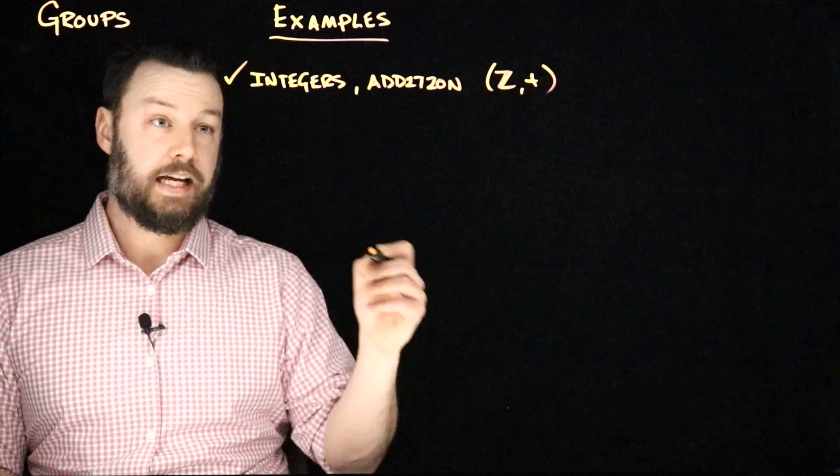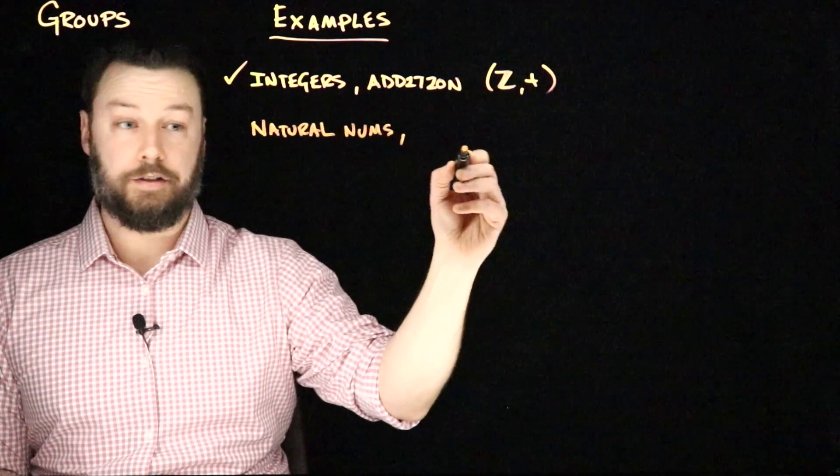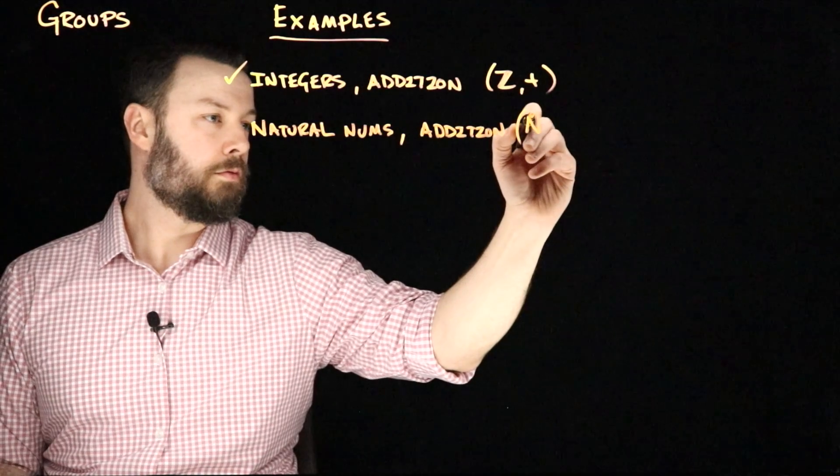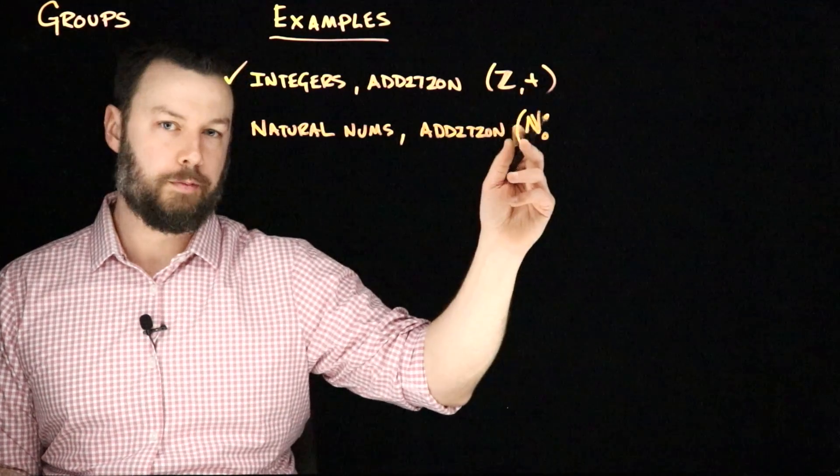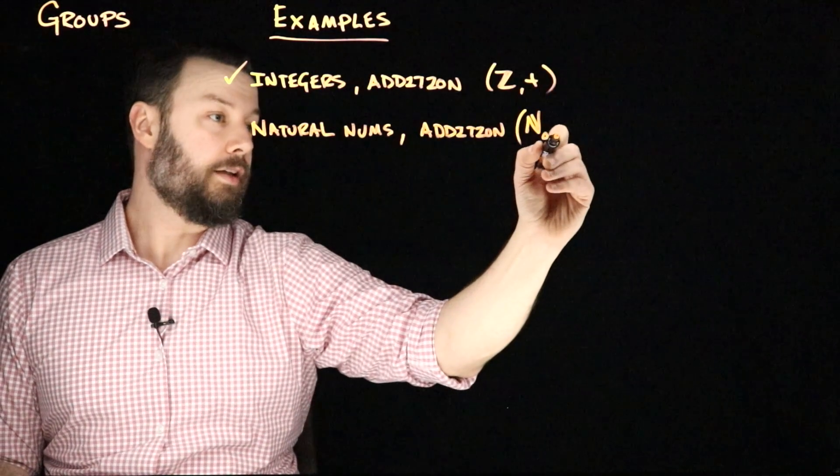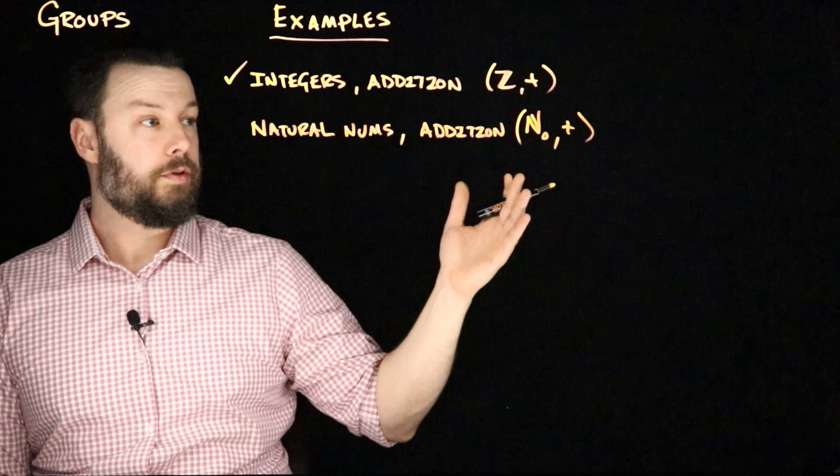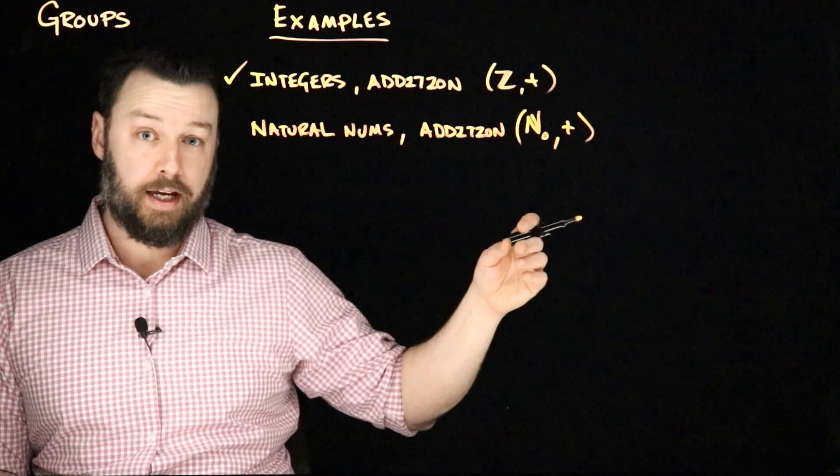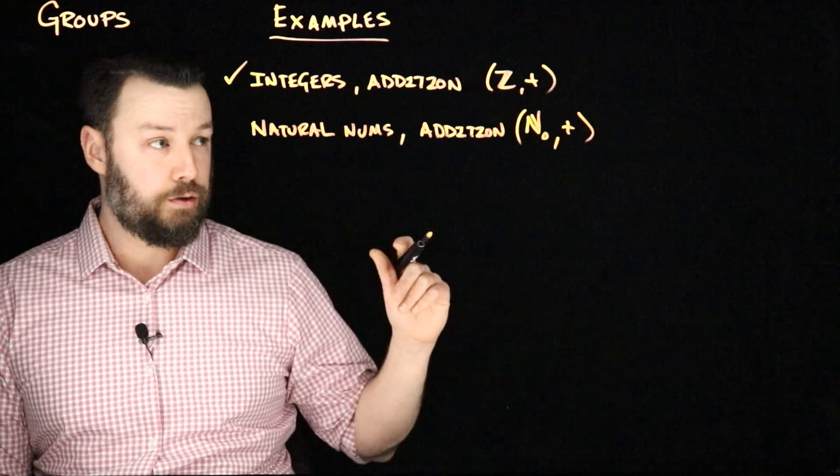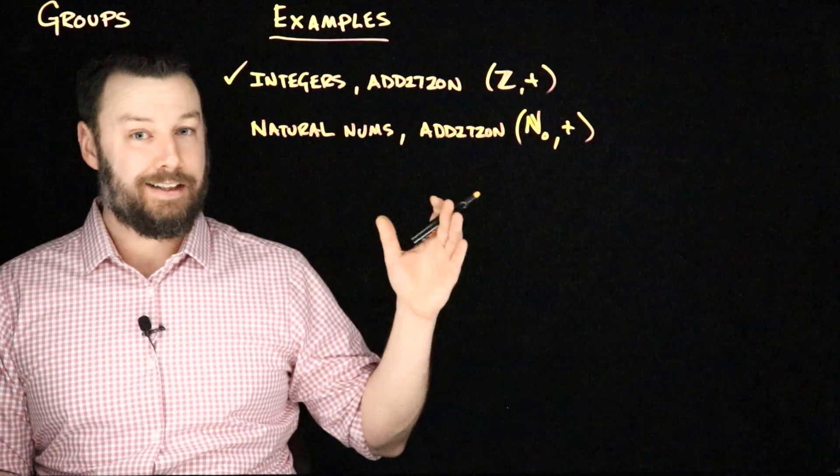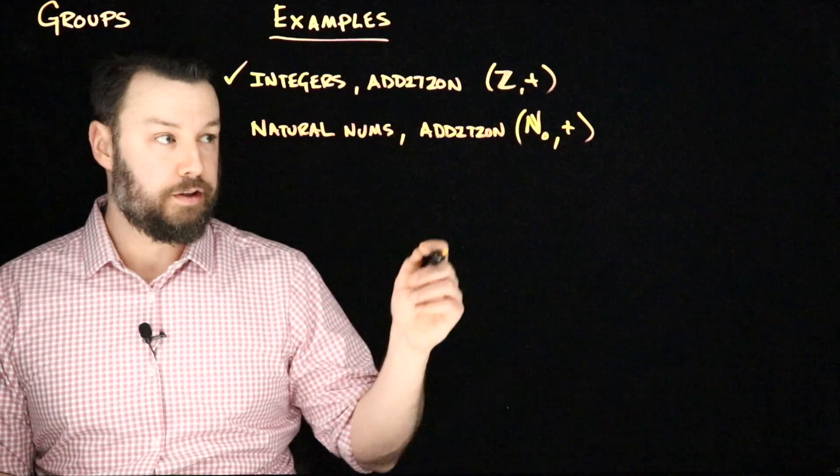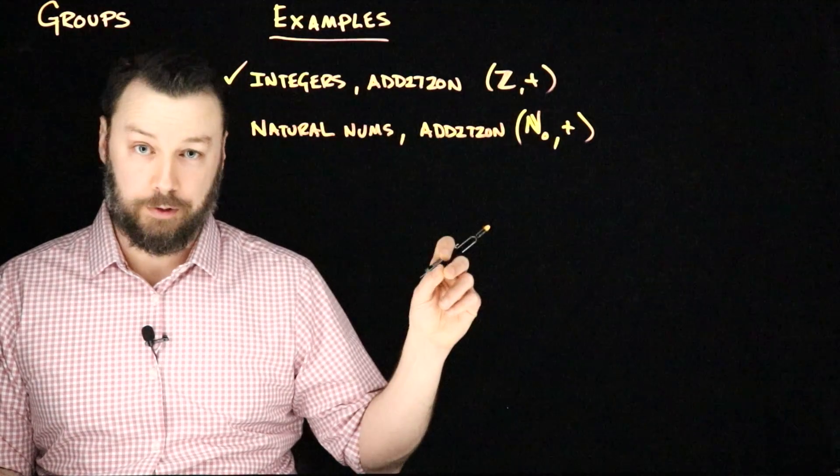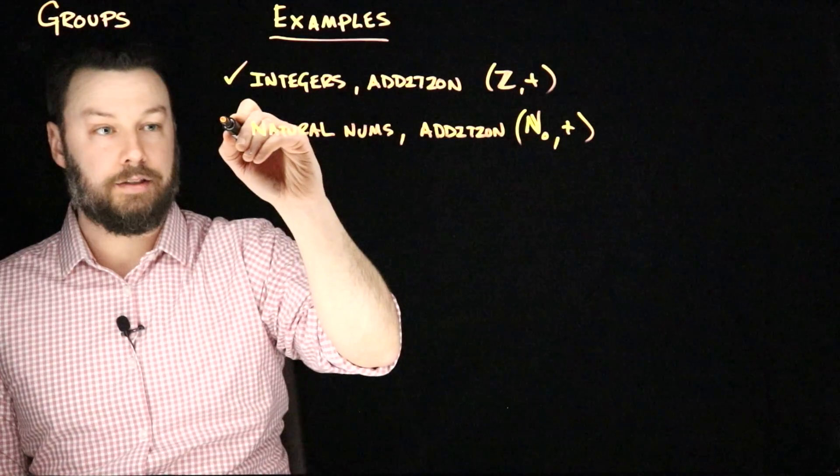Another thing we might think of is the natural numbers and addition. Let's take this to include the zero element. I'll write the little zero there to indicate that the natural numbers, so this is zero, one, two, three, four, five, so on, and addition. Now, I want you to think for a second about whether or not this is a group. If I add two of them, I get another member of the natural numbers and it has the neutral element zero, that if I add that to any natural number, I get that natural number back. But it's not a group because it does not have inverses. Since it doesn't have negative numbers, then I can't add any two non-zero natural numbers and get the zero element. So this is not a group.